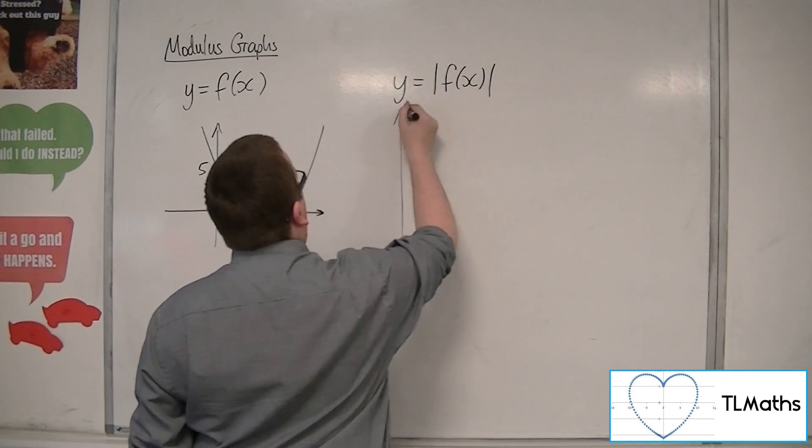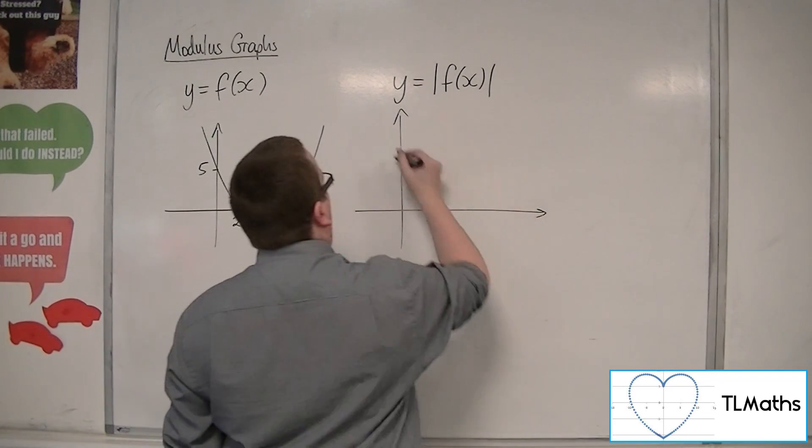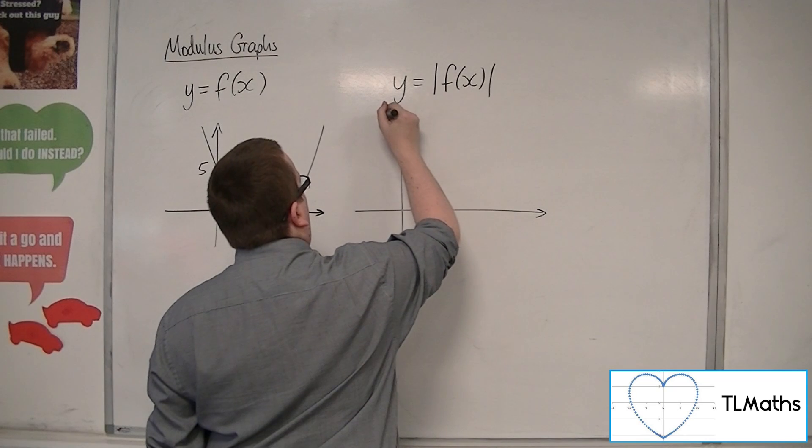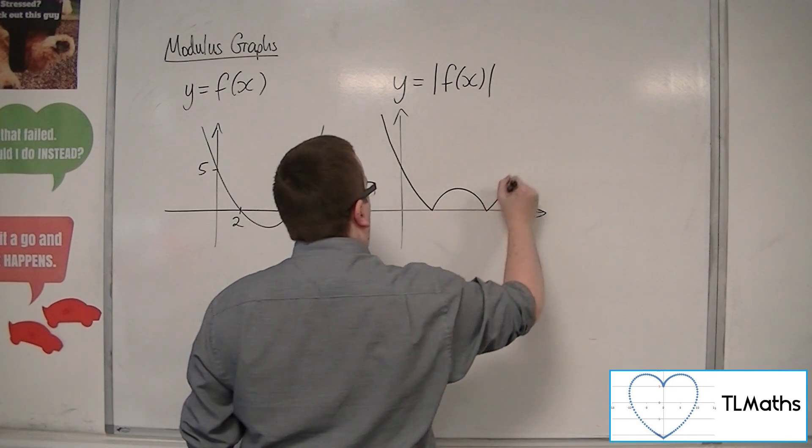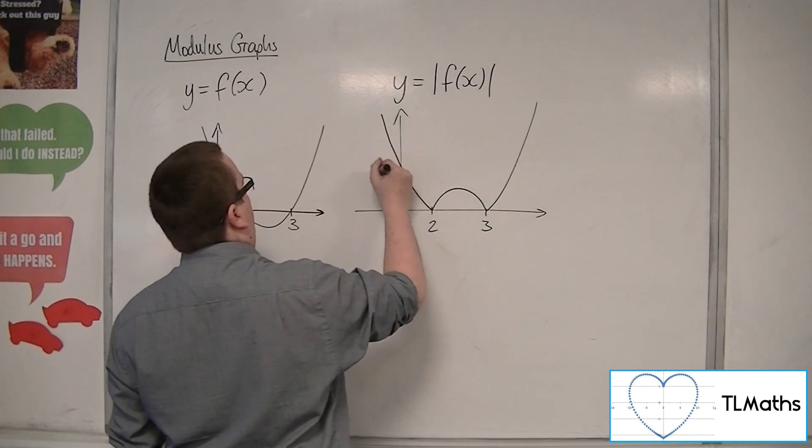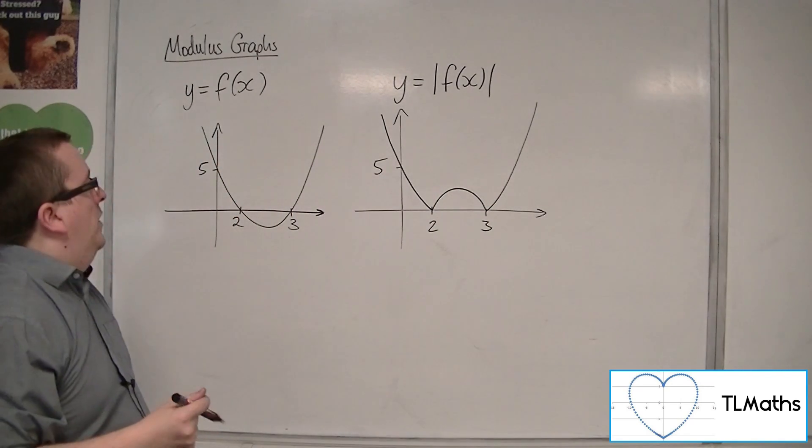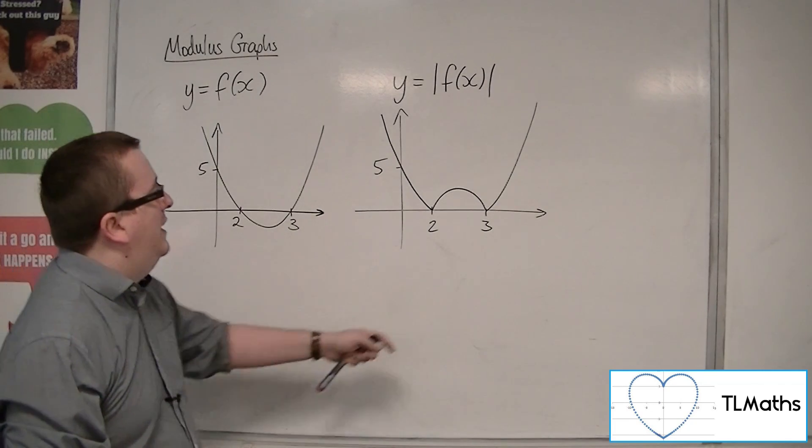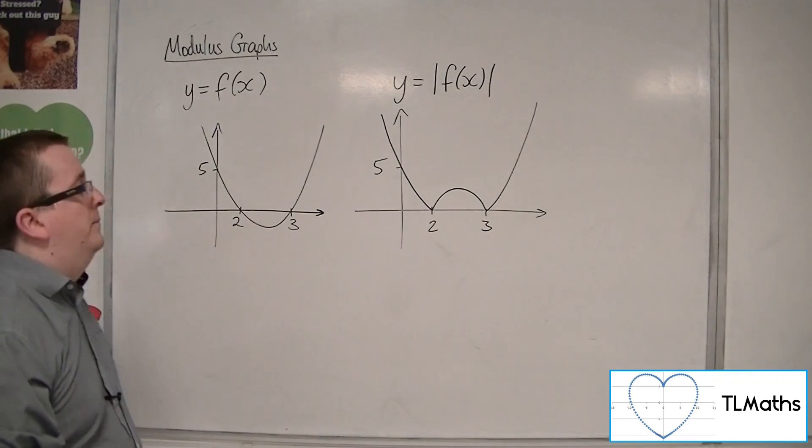So the sketch of this graph would look something like this. There's 2, there's 3, and there's 5. What's happened is that that portion that was below the x-axis has been reflected up.